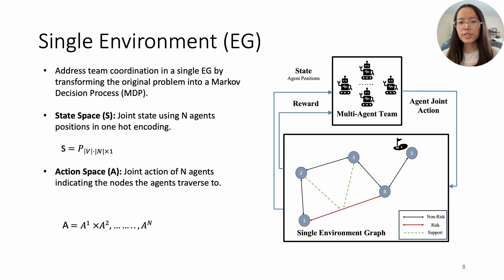To address this limitation, we devise a strategy that ensures not only scalability but also agent coordination. In the first part of the paper, we address team coordination for multiple agents with a single EG. We transform the problem formulation into MDP with its states as joint agent position and actions as their joint movements.